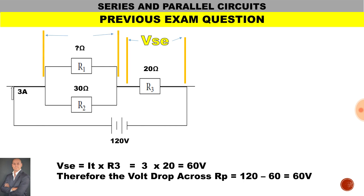This allows us to determine the volt drop across the parallel branch. We take the supply voltage minus the volt drop across the series resistor. Therefore, 120 minus 60 gives us 60 volts across the parallel branch.